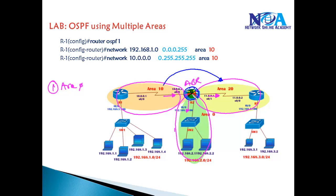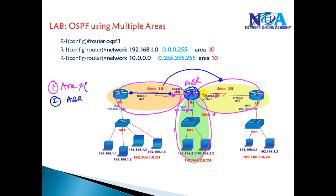There must be at least one Area Border Router connecting the multiple areas. In my scenario this condition is satisfied. The third condition is that interfaces facing each other must be in the same area to establish a neighbor relationship — if they are not in the same area they will not form neighborship.